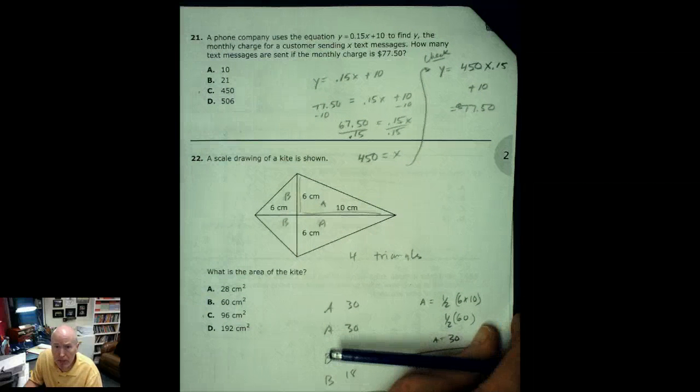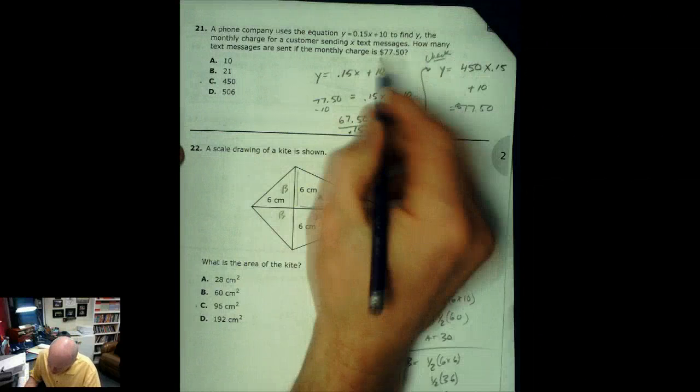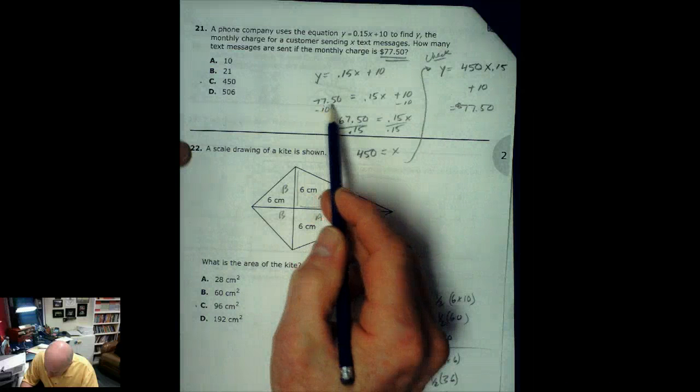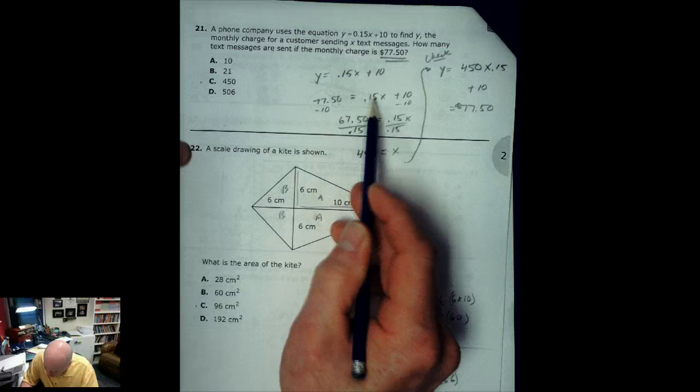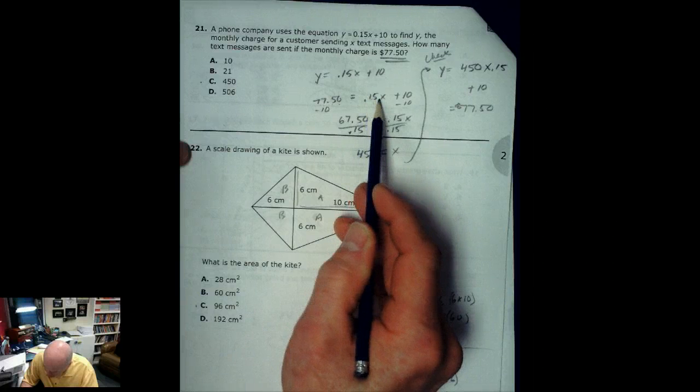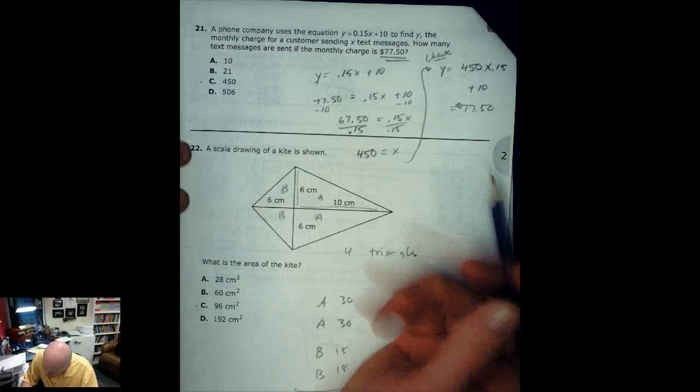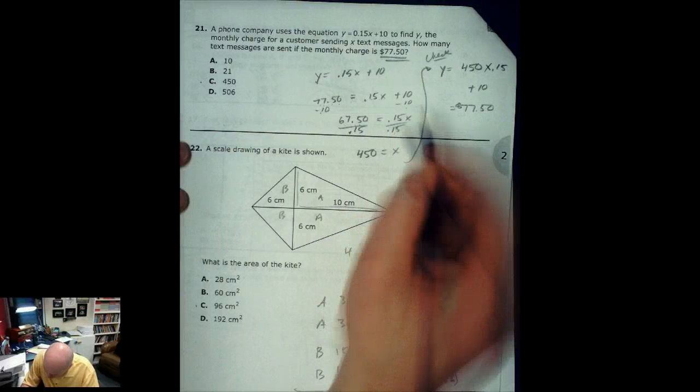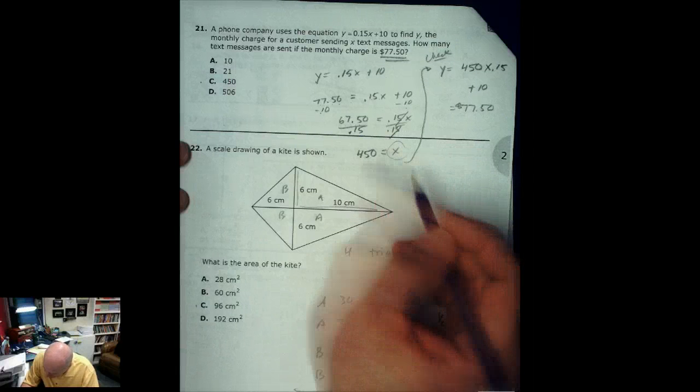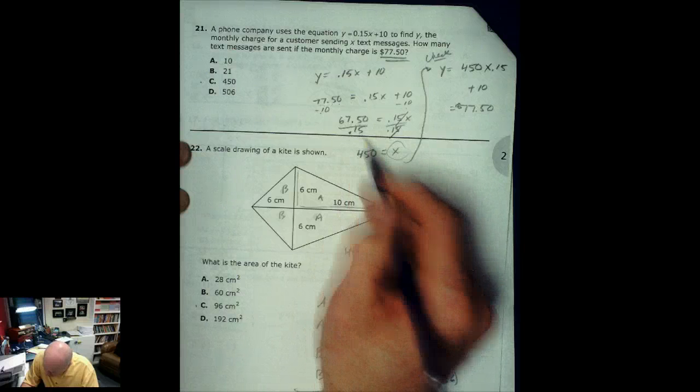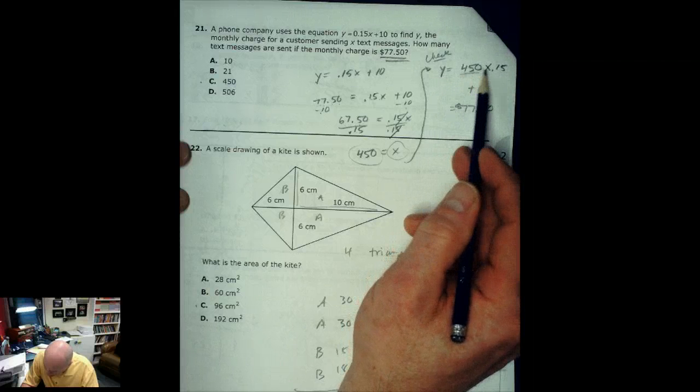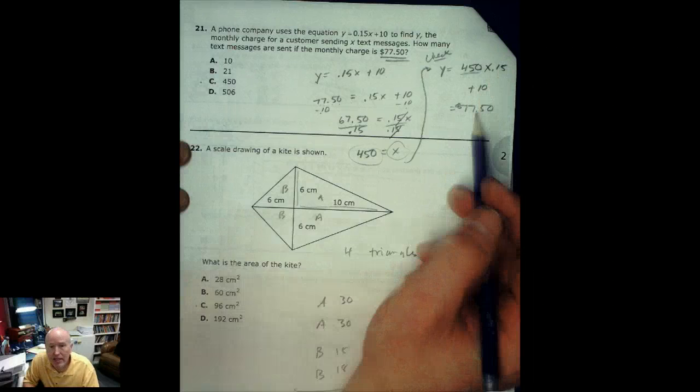The next one, phone company uses this equation. Well, this is really confusing to begin with. Until I got down to the bottom here and I saw that the monthly charge is 77.50. So then I could substitute that in for the Y. So I had 77.50 equals .15x plus 10. Well, then I saw that as a two-step equation. So I subtracted 10. I got 67.50 equals .15x and then I divide by .15 both sides. Those crossed off. I've isolated my x. 67.50 divided by .15 is 450. And that answer makes sense. I was just kind of checking it up here. So I have 450 texts times .15 plus $10 would give me that 77.50.